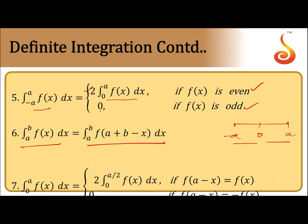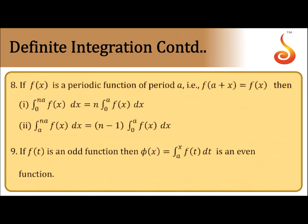Next: integral from 0 to a of f(x)dx can be split into 0 to a/2 and a/2 to a. If the function satisfies f(a-x) = f(x), it equals 2·integral from 0 to a/2 of f(x)dx. If f(a-x) = -f(x), the integral equals zero.